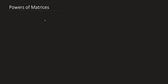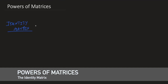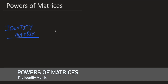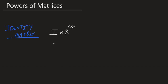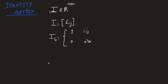Let's talk about the powers of matrices. First, let's define the identity matrix. The identity matrix is a square matrix in R^(n×n) such that its entries are given by the Kronecker delta δ_ij. The entries of the identity matrix I are one whenever i equals j, and zero elsewhere. So the identity matrix has all ones on the diagonal and zeros everywhere else.